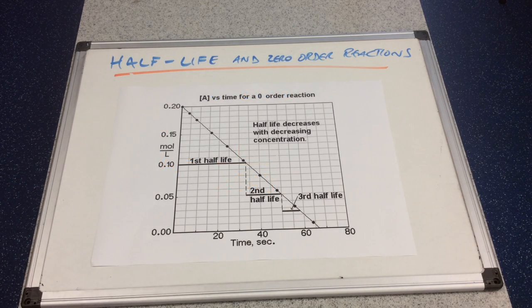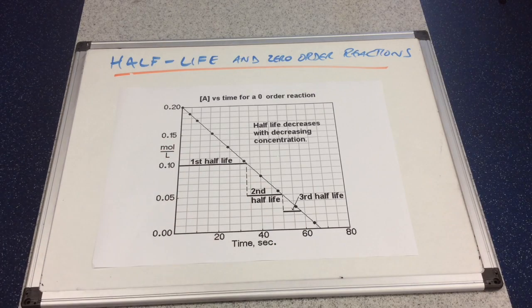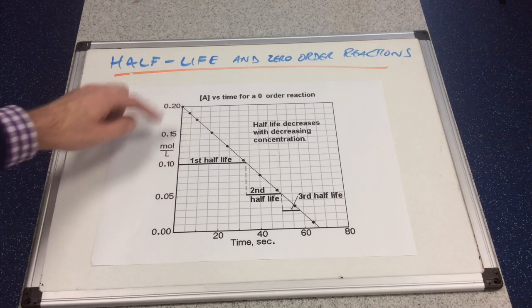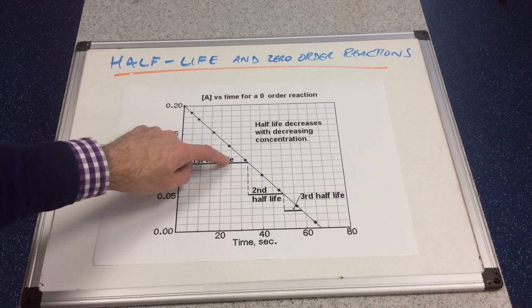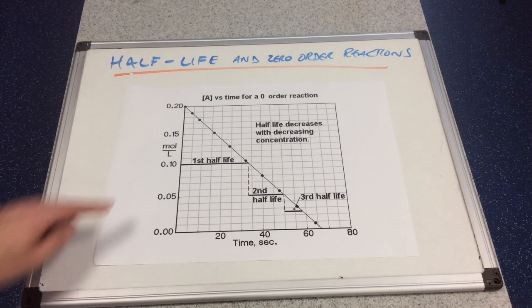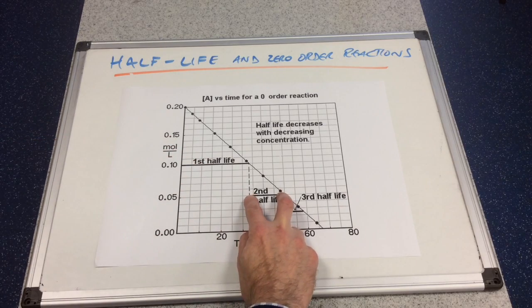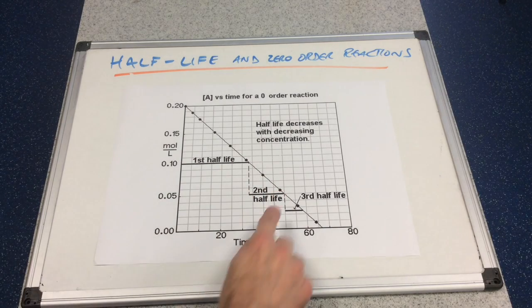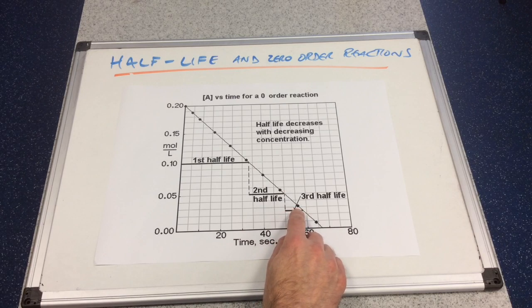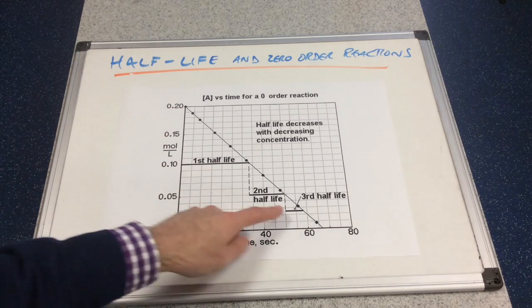We'll finish with zero-order reactions. You can see that the concentration-time graph is a straight line, and again we're starting at 0.2 moles per decimetre cubed. The first half-life to get to 0.1 takes about 6.5 squares, then to half again from 0.1 to 0.05 takes a shorter period of time. Looking at the third half-life going down to 0.025, we get an even smaller half-life. So for zero-order reactions, as the concentration lowers, the half-life decreases as well.